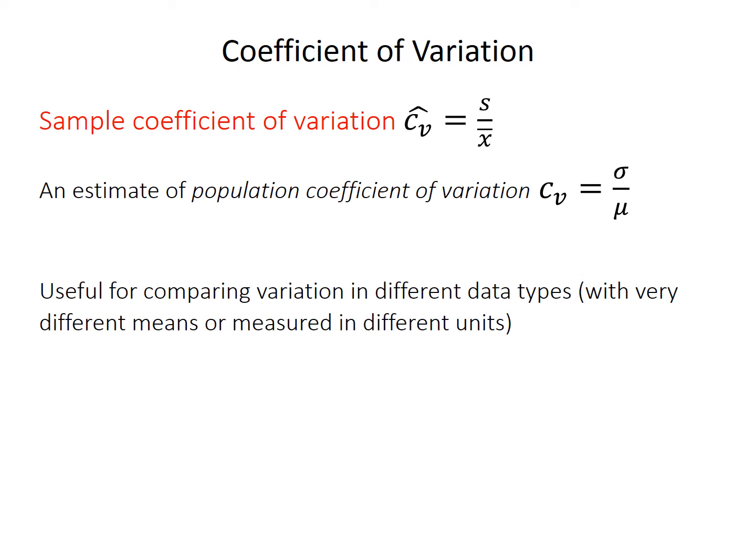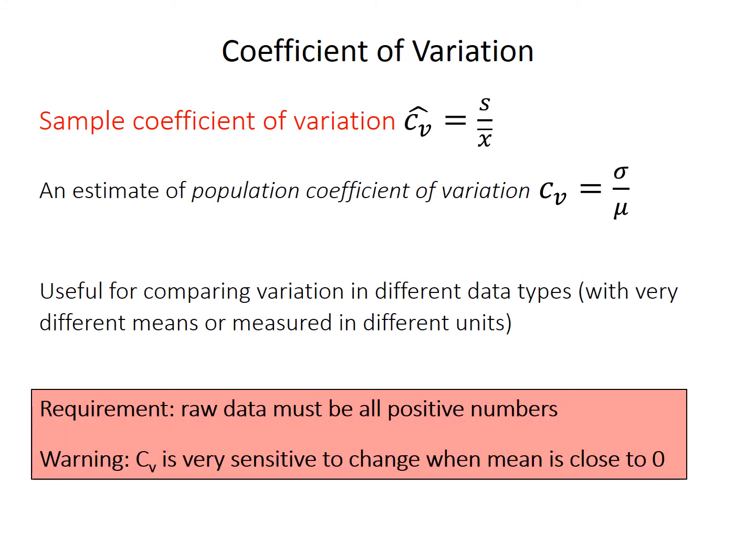So this is where you would use coefficient of variation. If the data types are different, let's say we want to compare, like, is pH more variable than carbon isotope composition? Well, they have different units and different scales, and so it doesn't make sense that they should have comparable standard deviations. It's also important to note that the coefficient of variation is only meaningful if all the data values are positive. So you can't use it if you have negative numbers. And also be warned that the calculated number is going to be very sensitive to change if the mean is close to zero. We're divided by very tiny numbers, and so the coefficient of variation can fluctuate a lot for very small changes in the mean if the mean is 0.001 or something like that.